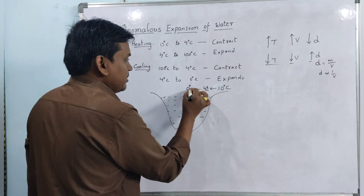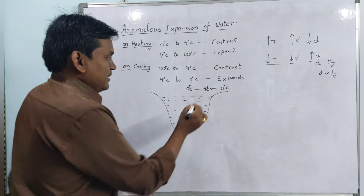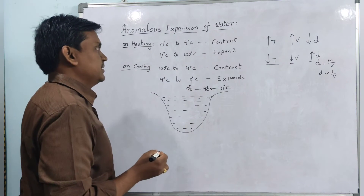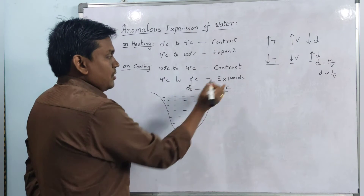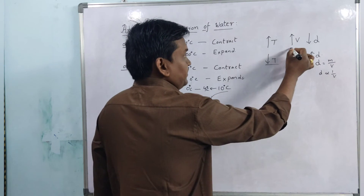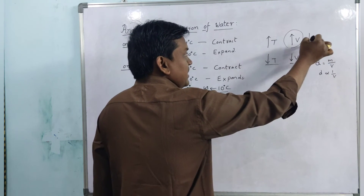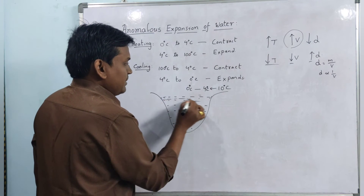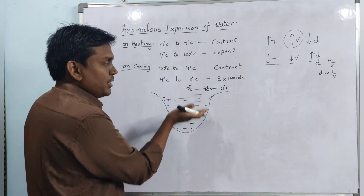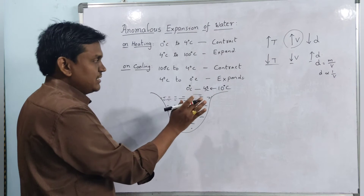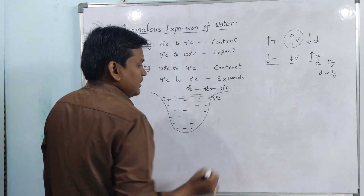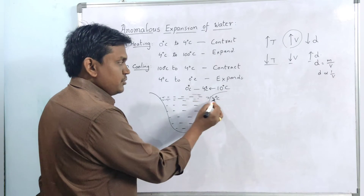After that, consider the temperature going from 4°C to 0°C. When the temperature reaches 4°C, the anomalous expansion of water takes place. On cooling from 4 to 0°C, water expands — volume increases, which means density decreases. So this low-density surface layer will remain at the top. The surface is now at 4°C.